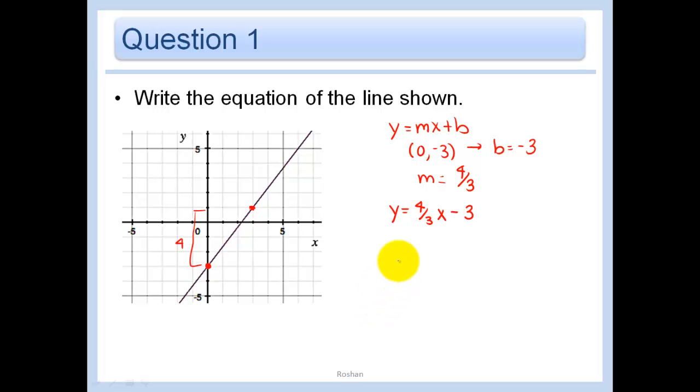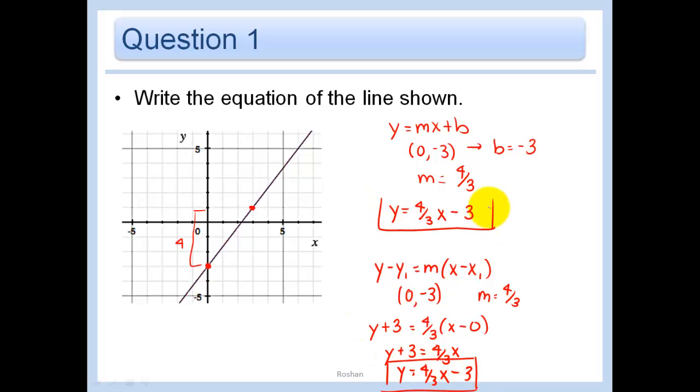Now if you want to use the other formula, what you would write is y minus y1 equals m times x minus x1. We'd use the point that we found, which was 0, negative 3, and we only need the one point, and then we already know that the slope is 4 thirds. And using the other formula, we have y minus minus 3, which we can write y plus 3 equals 4 thirds x minus 0. And then solving that for y, we have y equals 4 thirds x minus 3. Same exact answer, makes no difference which formula you use.